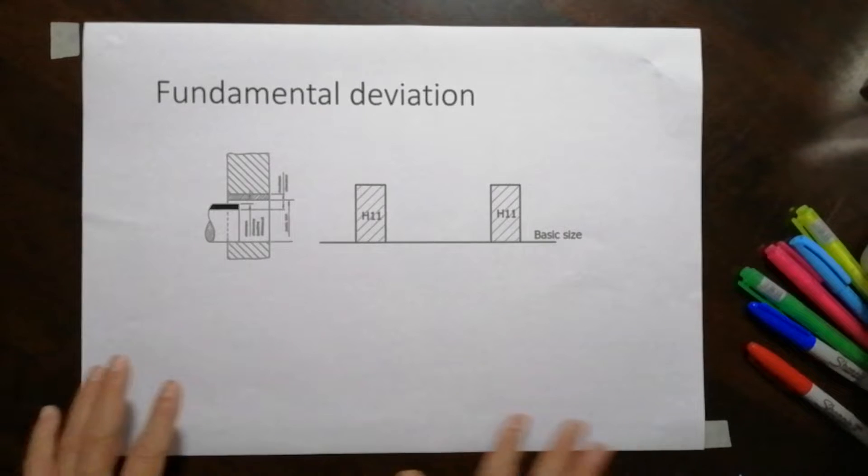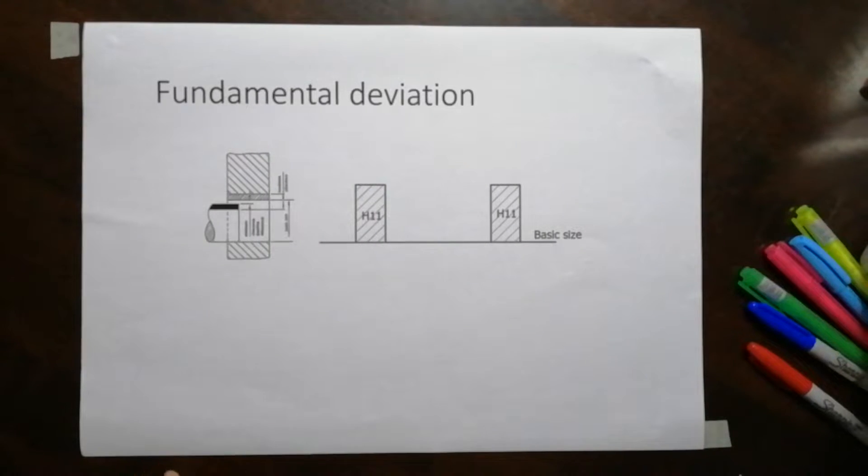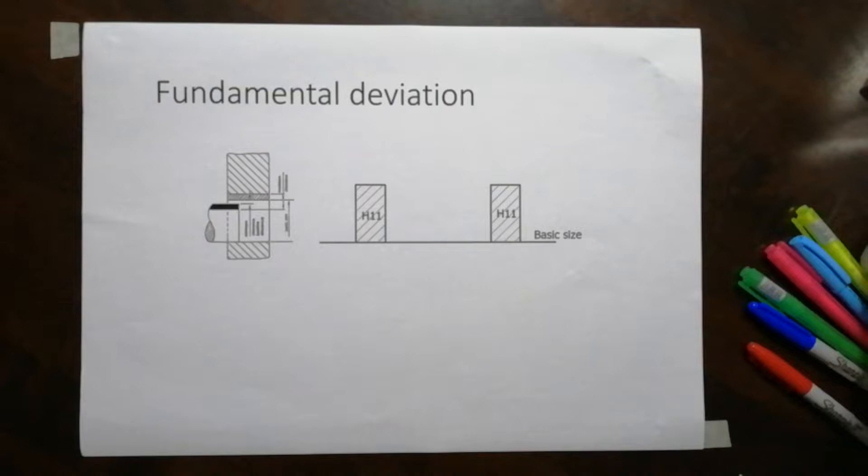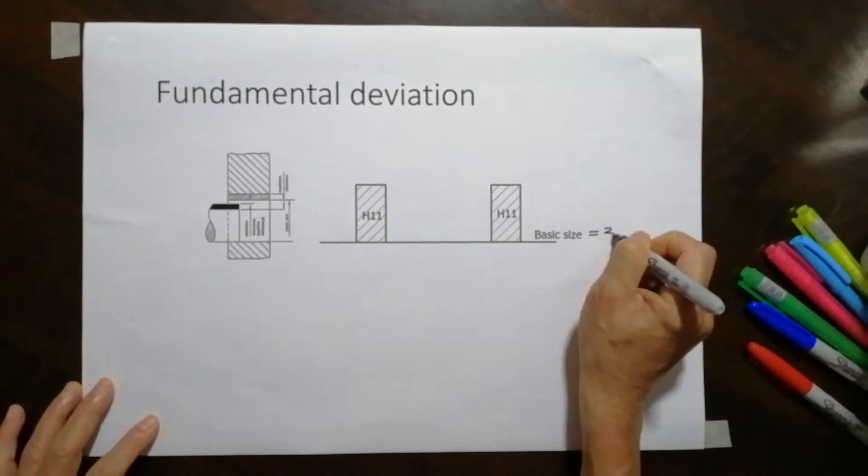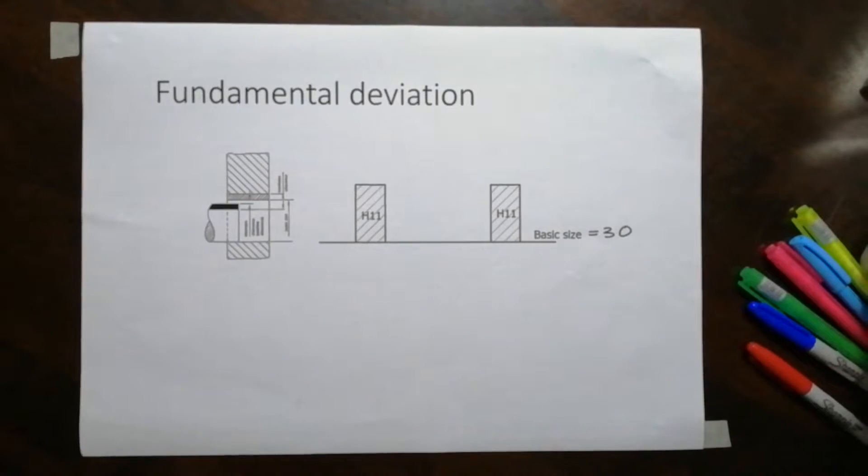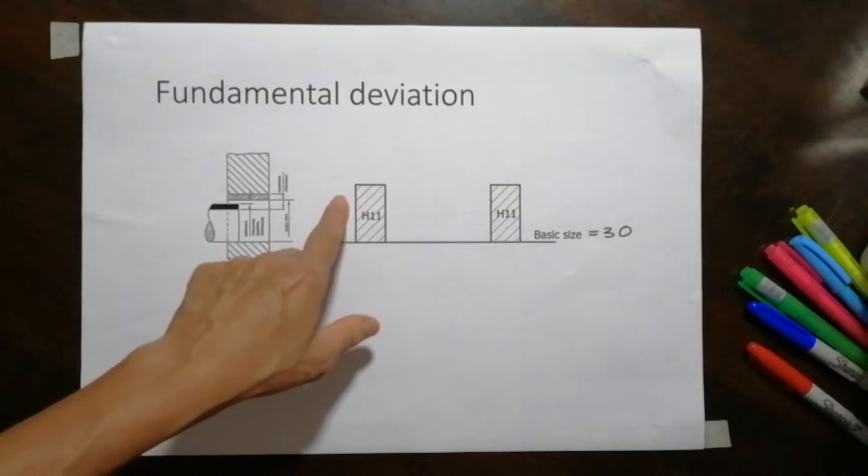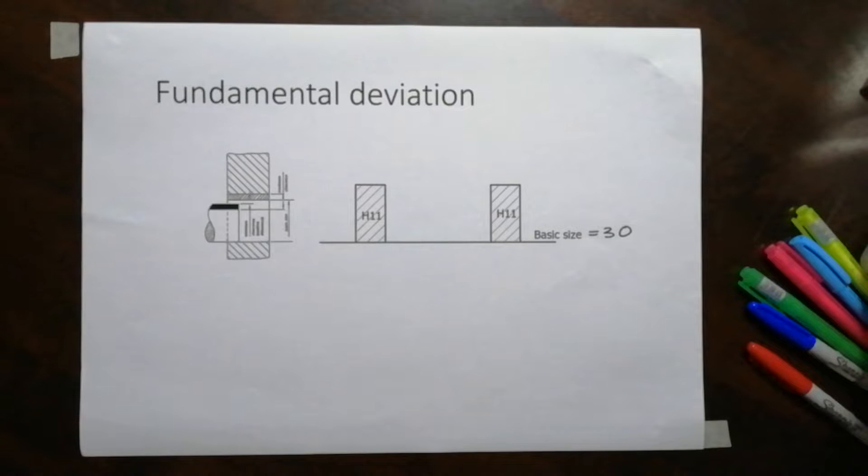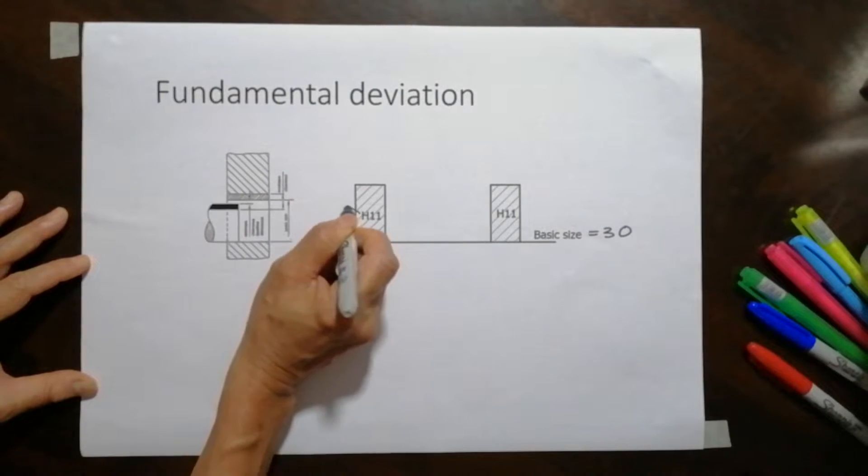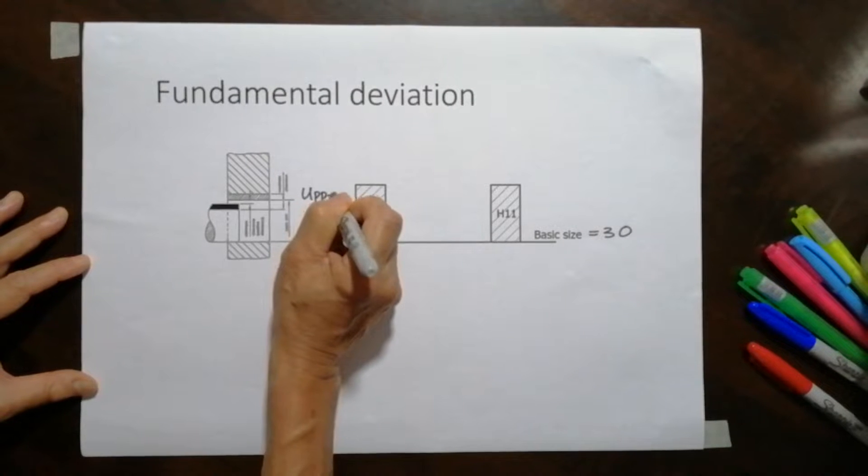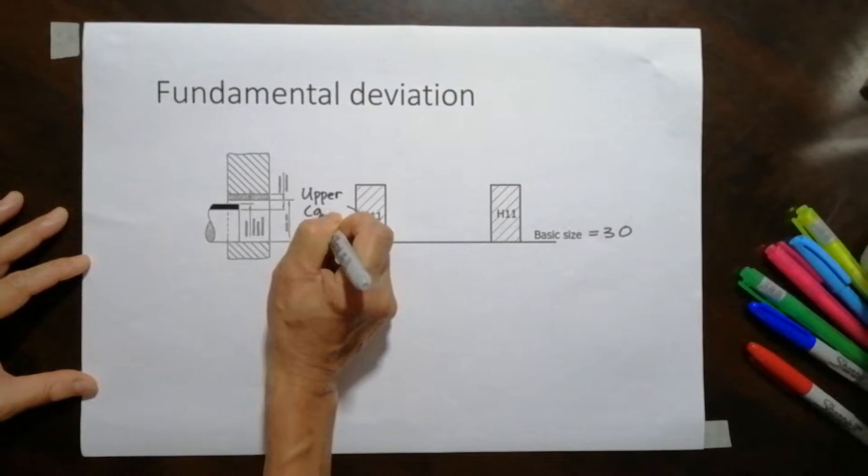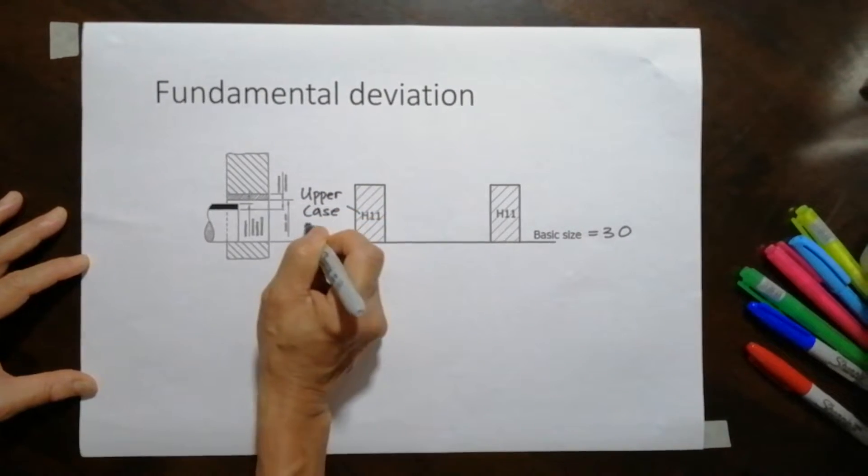So let me just express this system first. In this way they must have a basic size and let's assume today we are interested in a basic size of 30 and then you realize there's a rectangle box, shaded rectangle box. This rectangle box shows the tolerance, the size of tolerance. The letter H is uppercase.